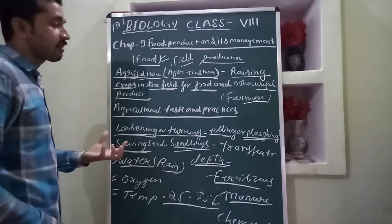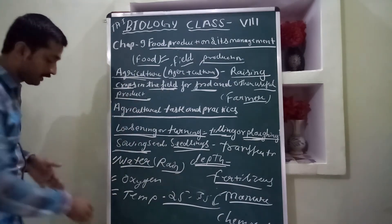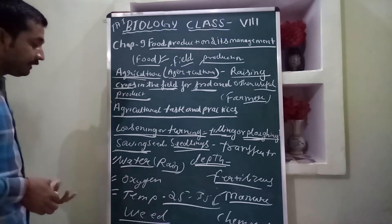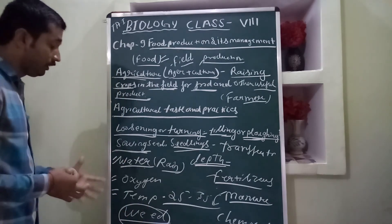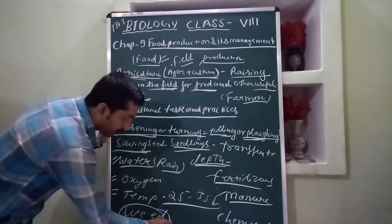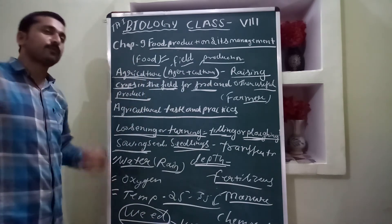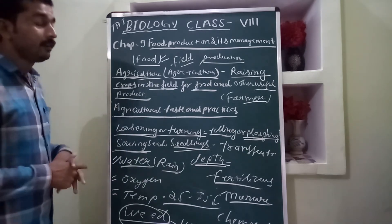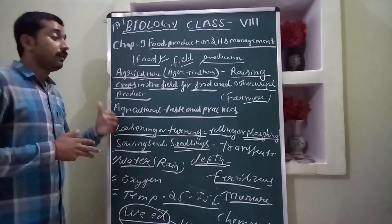Manure means bio-composted material — the excreta of animals and plants. Chemicals are also used to protect our crops and seedling plants in the crop field from pests and other animals. Weed means unwanted or uncultivated plants that germinate in the crop field and harm our crops. We remove weeds manually or by using chemicals — this process is called weeding.